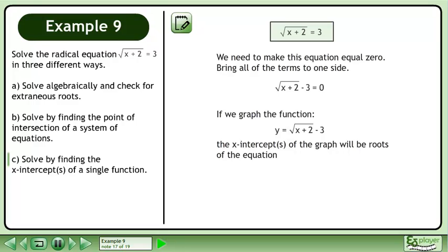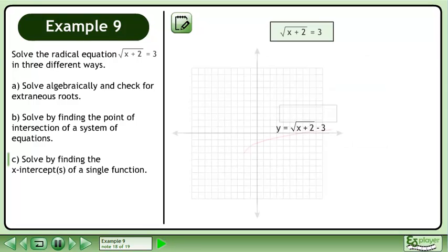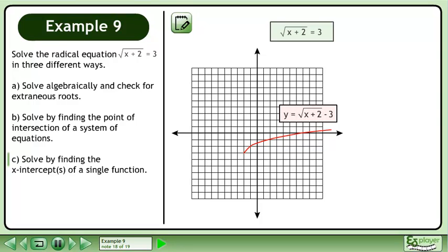If we graph the function y equals the square root of x plus 2 minus 3, the x-intercept is the point of intersection of x equals the square root of x plus 2 minus 3.